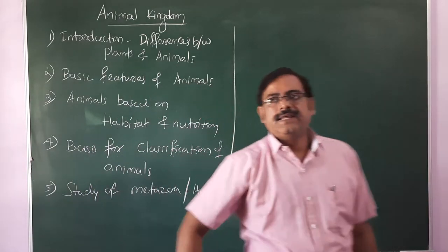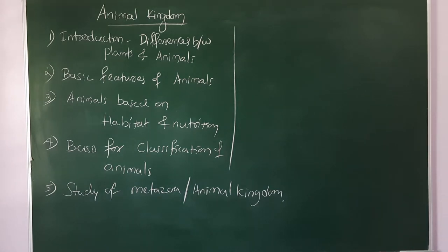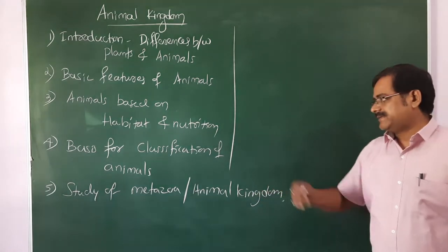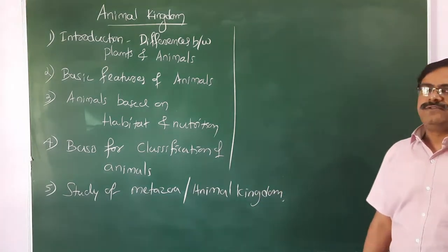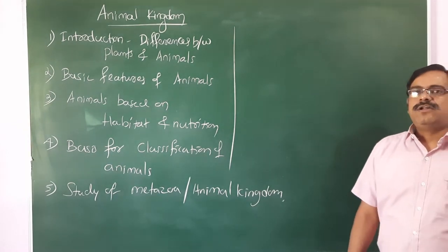In this chapter we will be talking about the animal kingdom — introductory points related mainly to the differences between plants and animals, as well as basic features of animals, animals based on habitat and nutrition, and the basis for classification. Metazoa refers to animals, and we will discuss invertebrates and vertebrates, non-chordates as well as chordates.